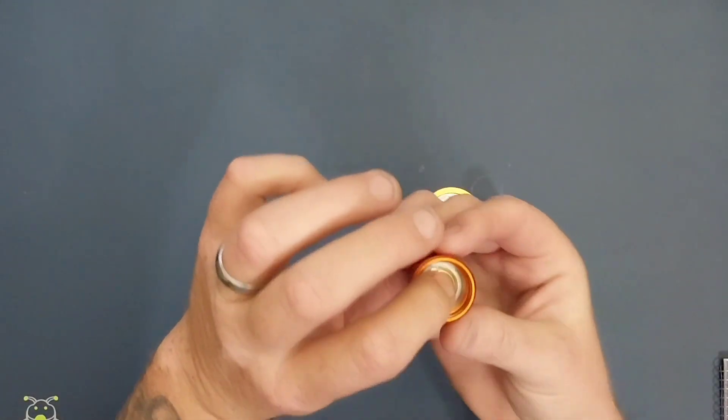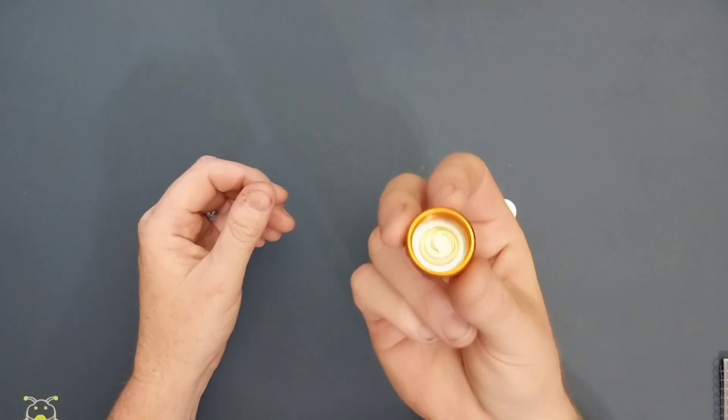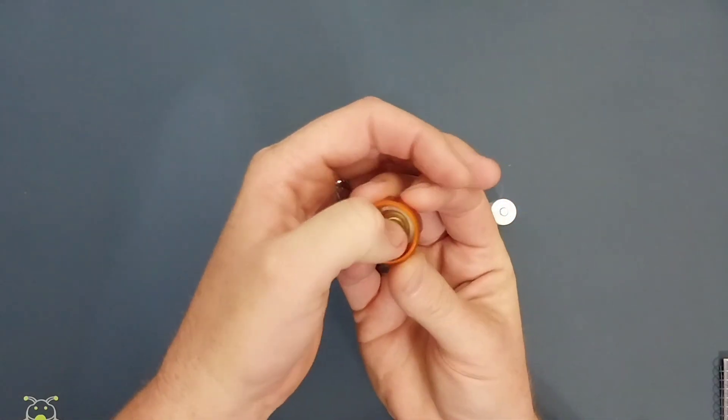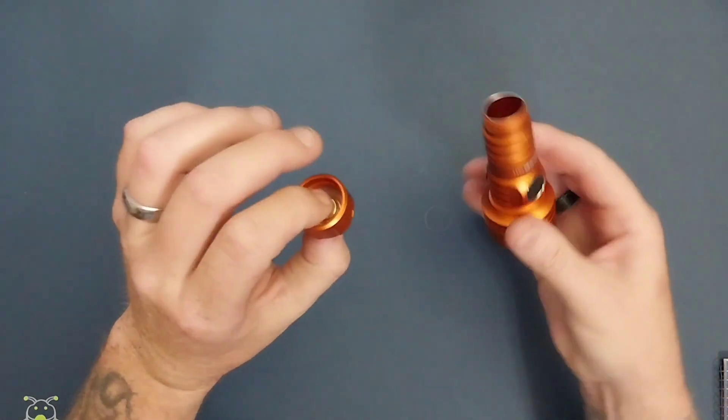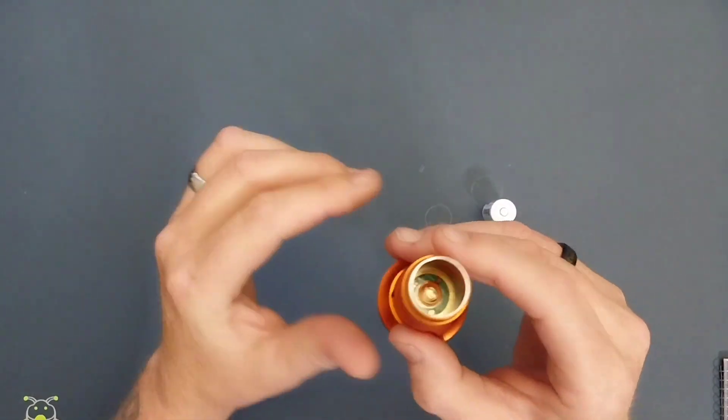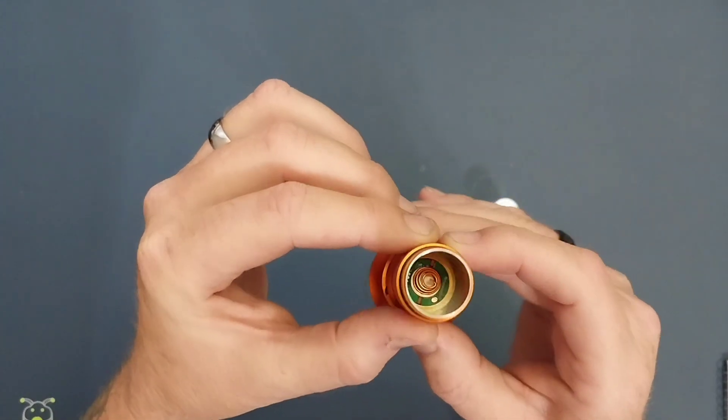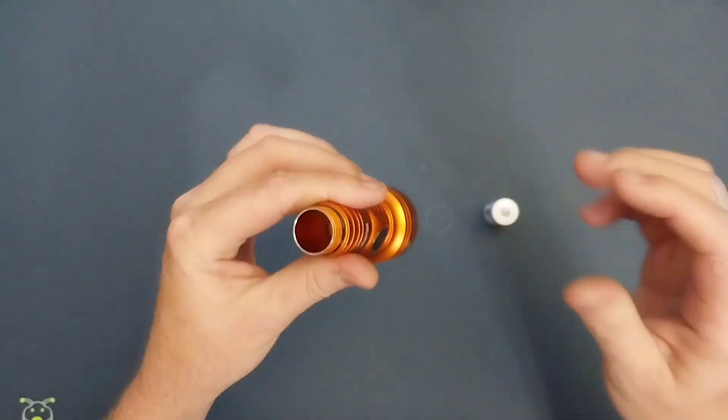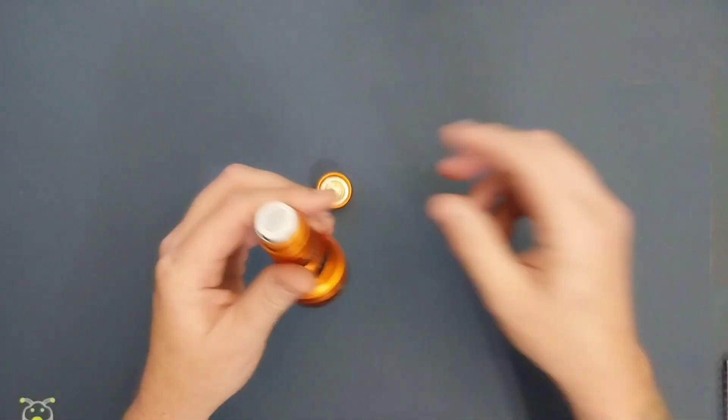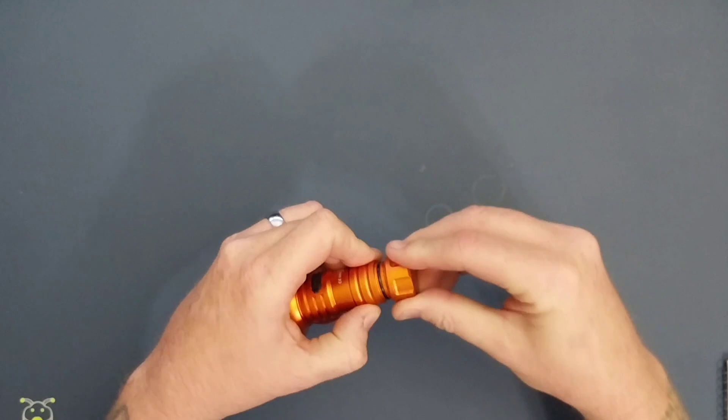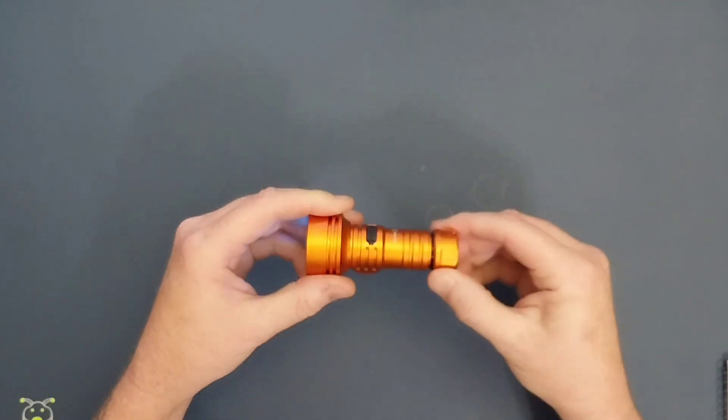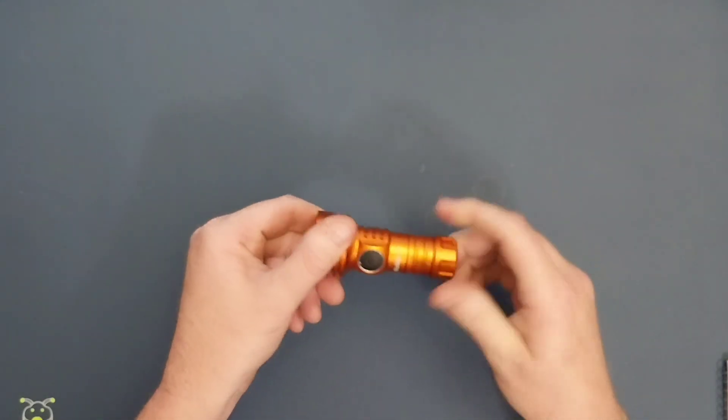The tail cap does have a spring in it. It's not too stout of one but it does give it a good connection because the driver also has a spring in it as well. So when you have the battery in there, it's a nice connection. Another cool thing about this one is you can actually have interchangeable tubes.